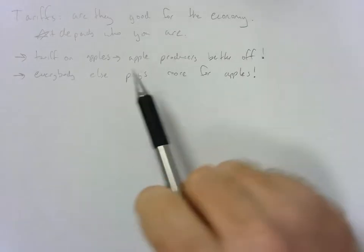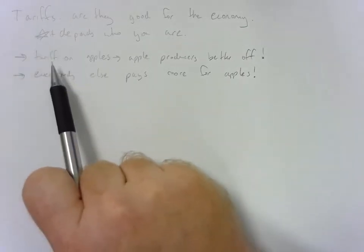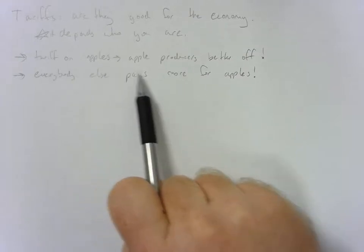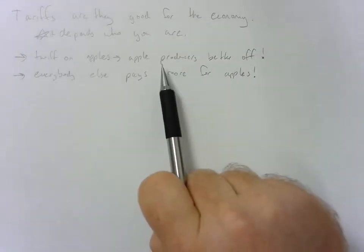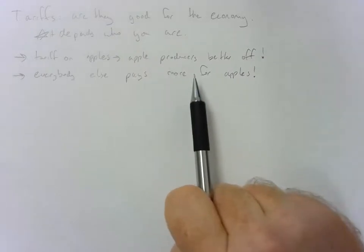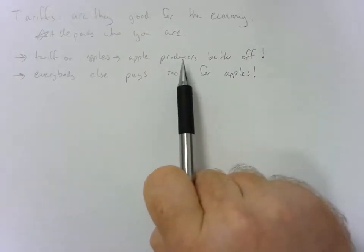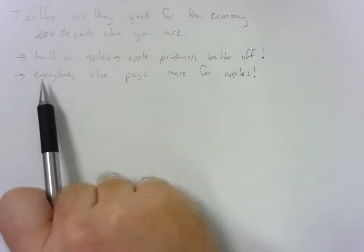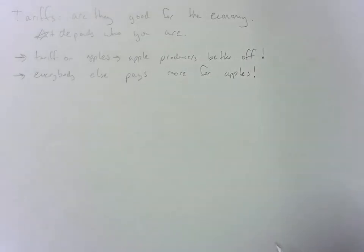So basically, when we look at tariffs, the tariff being placed on a certain good—in this case apples—makes those apple producers better off. In general, those apple producers are producing jobs, so people whose jobs are involved in producing apples are better off, whereas everybody else pays higher prices. That's not good. Let's look at the graph.